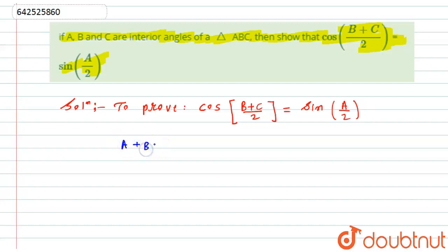I will take A to the other side, so this expression will become B + C = 180° - A.